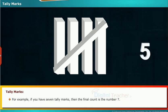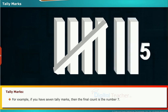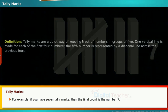For example, if you have 7 tally marks, then the final count is the number 7. Definition: Tally marks are a quick way of keeping track of numbers in groups of 5. One vertical line is made for each of the first 4 numbers. The 5th number is represented by a diagonal line across the previous 4.